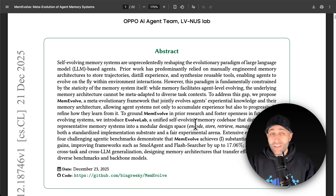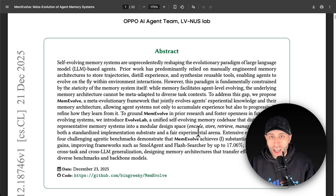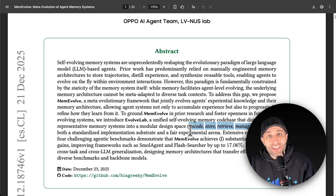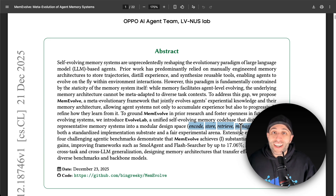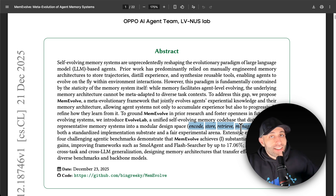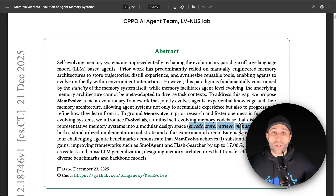What MemEvolve is trying to achieve is to define memory in four pieces: encode, store, retrieve, and manage. By defining these four components, we let the AI agent design by itself what the best memory architecture is for the use case — the best way to encode, store, retrieve, and manage memory. As you use your AI agent, it designs the memory system by itself. I don't mean just updating memory content; I mean the whole architecture of the memory can be redesigned and evolved as you use your agent.